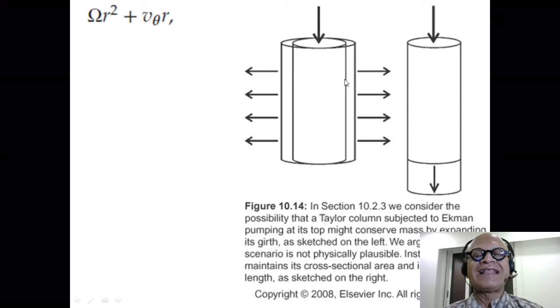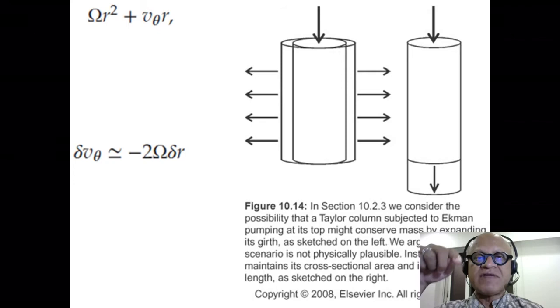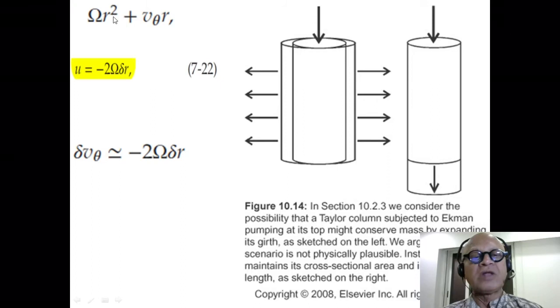If it keeps getting fatter and there's a change of Δr in the radius, then the azimuthal velocity has to change to maintain the angular momentum. So the longitudinal or azimuthal velocity of the Taylor column has to change by -2Ω·Δr, which means if it got fatter it has to slow down, if it got thinner it has to speed up. That violates the basic assumption of Taylor-Proudman theorem of a steady flow.